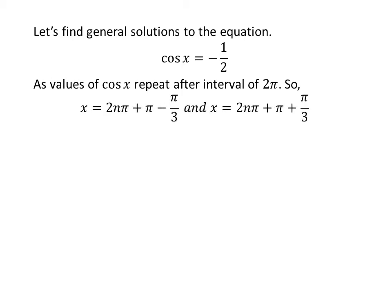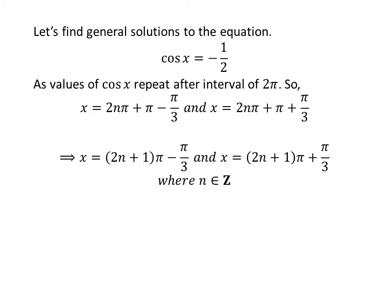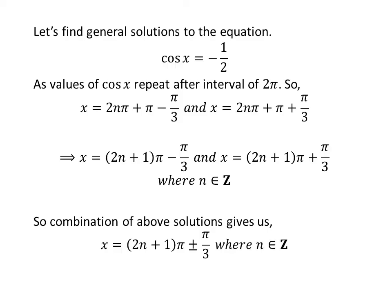Let us find the general solutions. As we know, the values of cosine of x repeat after an interval of two pi. So the general solutions are two n pi plus pi minus pi upon three, and two n pi plus pi upon three, where n is an integer. Further simplification gives us the general solutions as two times n plus one times pi minus pi upon three, and two times n plus one times pi plus pi upon three. Combining these, the general solution is two times n plus one times pi plus or minus pi upon three, where n is an integer.